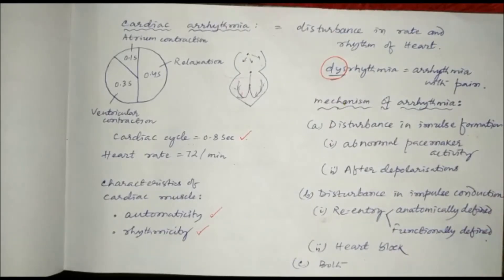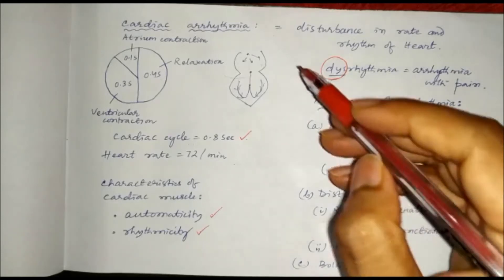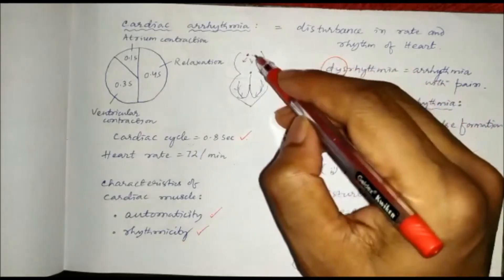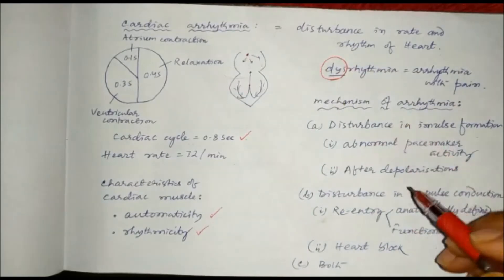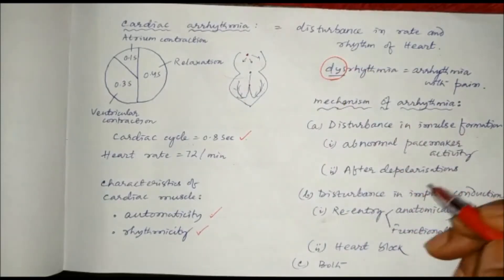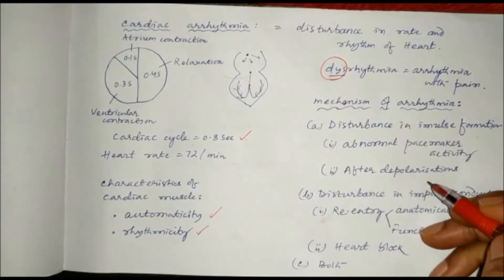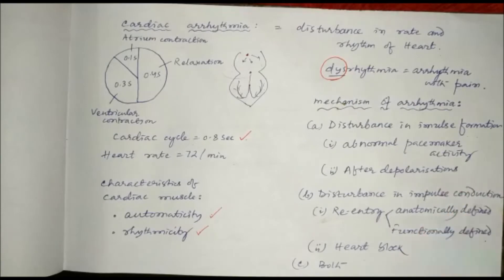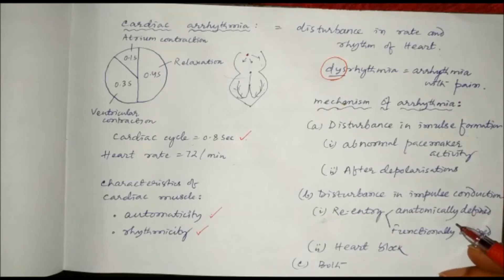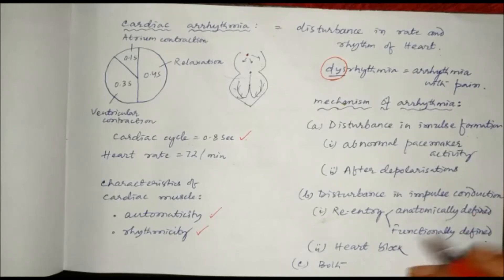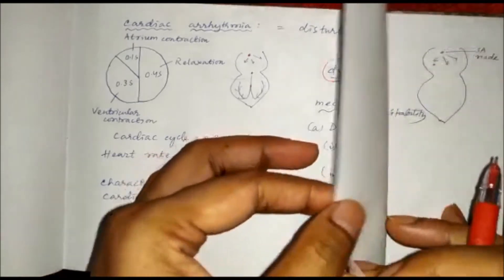Disturbance in impulse formation occurs due to abnormal pacemaker activity, and the pacemaker is nothing but our SA node. Disturbance in impulse formation can also occur due to after depolarizations. And disturbance in impulse conduction occurs due to re-entry, which may be anatomically defined or functionally defined, or may be due to heart block. So let us discuss one by one.